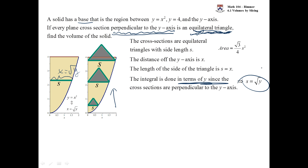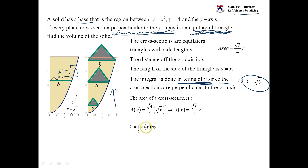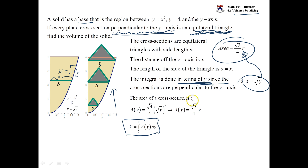That was the hard part of the problem — it's all downhill from here. The formula for volume by slicing is to integrate this cross-sectional area formula. A of y would be this area formula with s plugged in — with the root of y plugged in. When you square it, you just get y, so we just need to integrate root 3 over 4 times y. The lower limit is 0 — the lowest y ever is — and the highest y ever is 4. So those become your limits of integration.